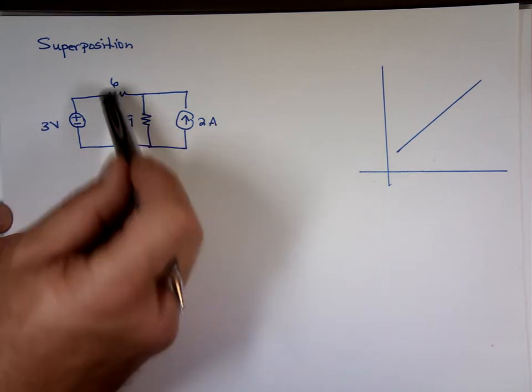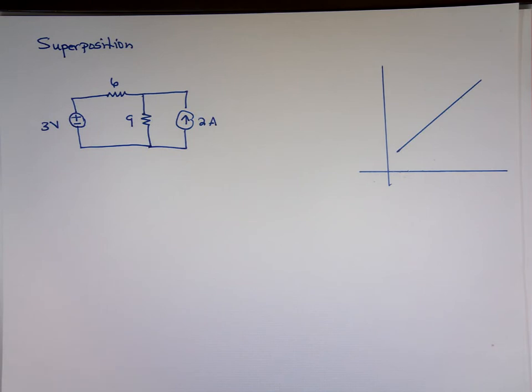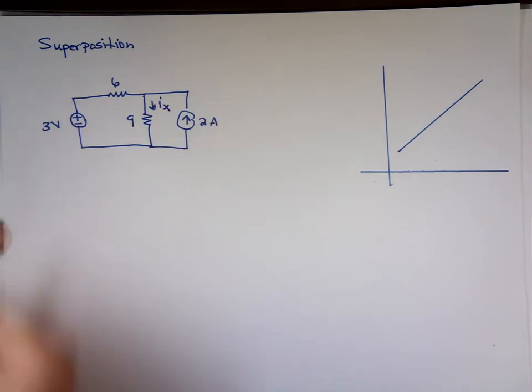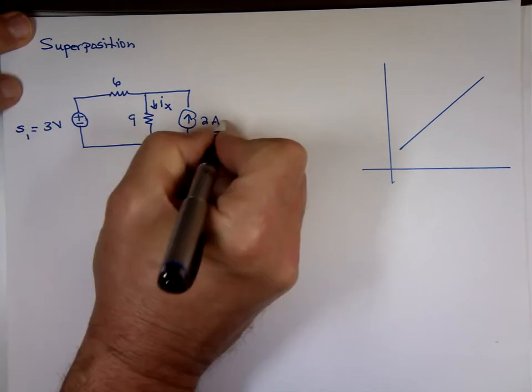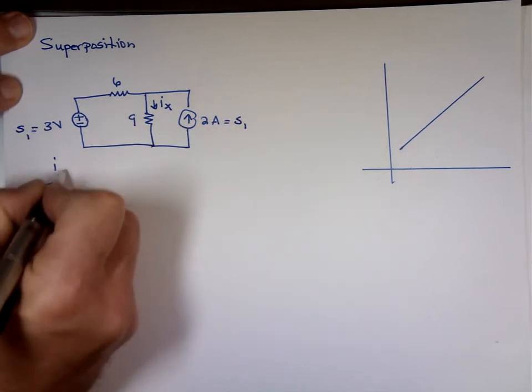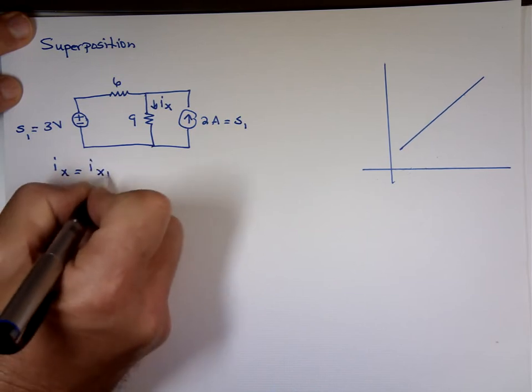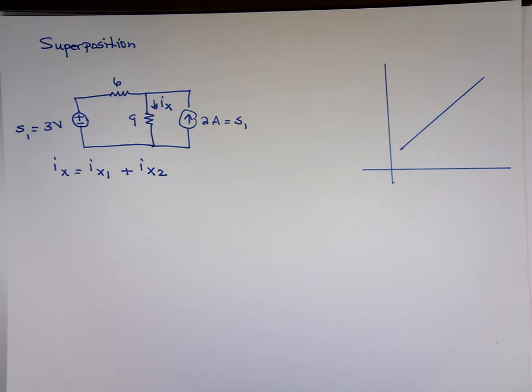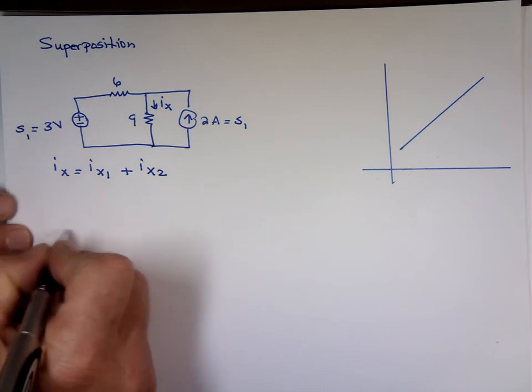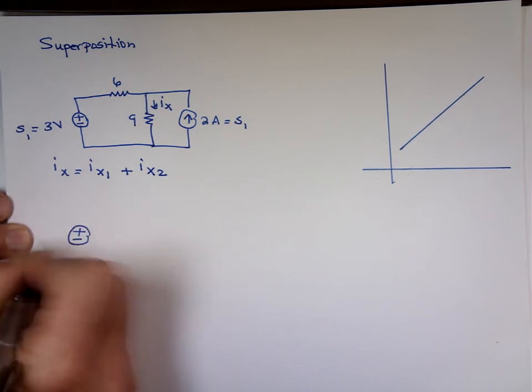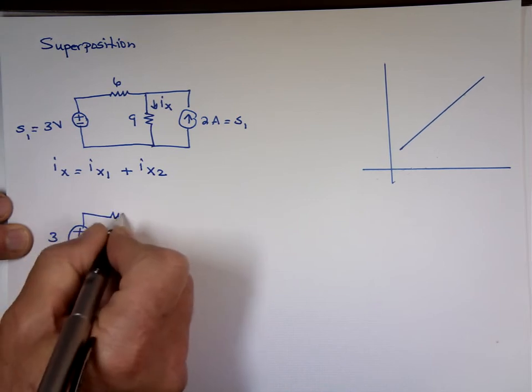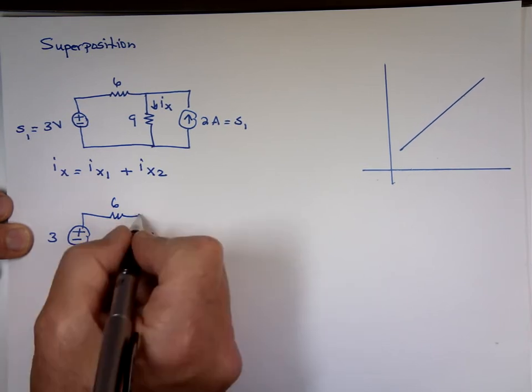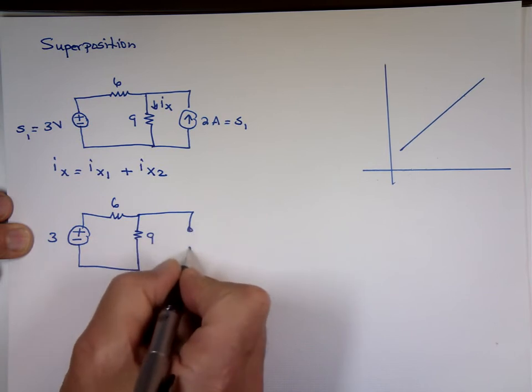And this is 2 amps. Since notice all the elements here are linear, I can apply the principle of superposition, which says you can find, let's say I'm looking for this current here, i sub x. If you want to find i sub x, we'll call this source 1, we'll call this source 2. Find i sub x due to source 1, add to it i sub x due to source 2. So first one is we take source 1, we leave it there which is 3 volts. And now we're going to kill source 2. How do you kill a current source? You kill a current source by making it an open circuit.